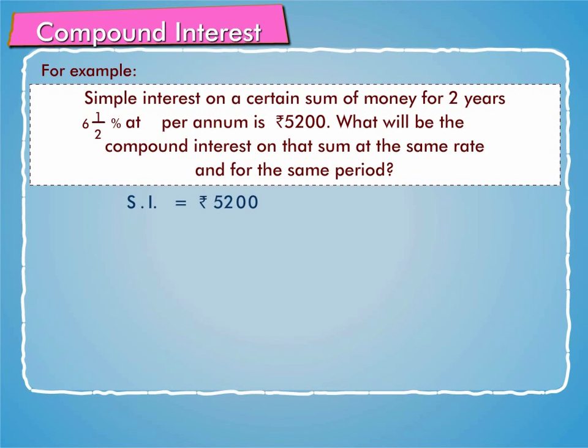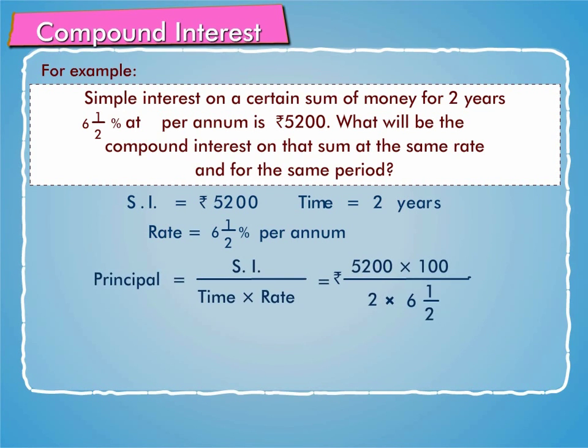Here, SI is equal to rupees 5200, time is equal to two years, and rate is equal to six and a half percent per annum. Now we know that principal is equal to SI by time into rate.